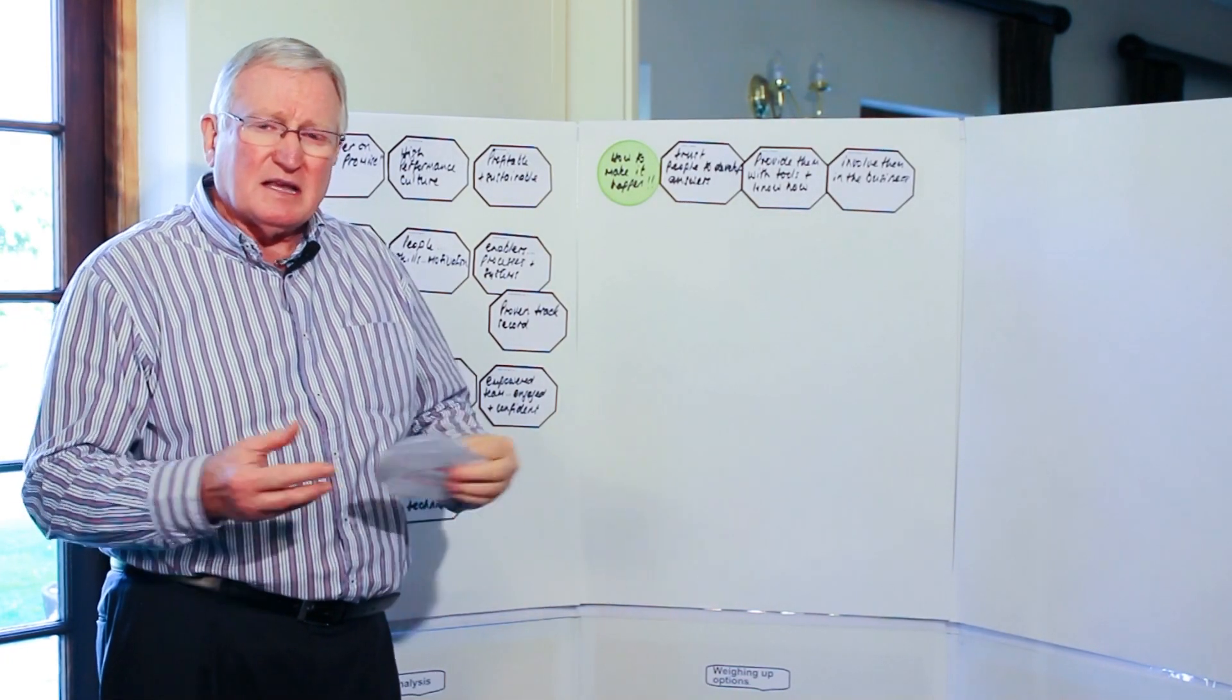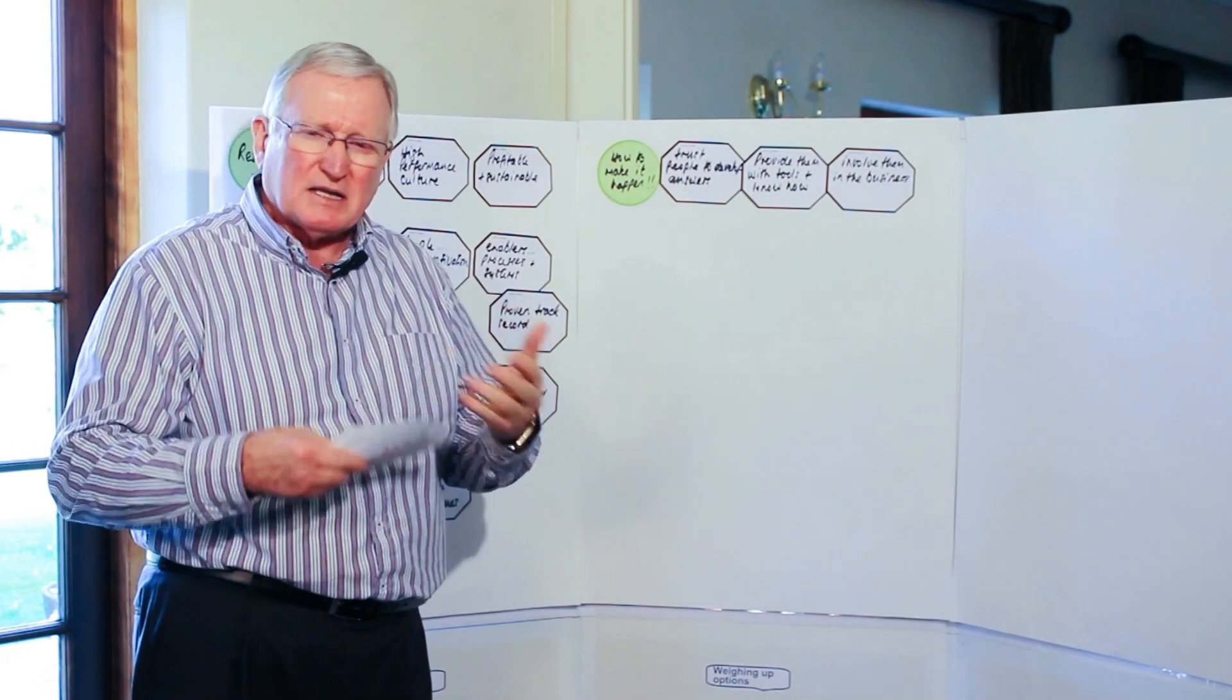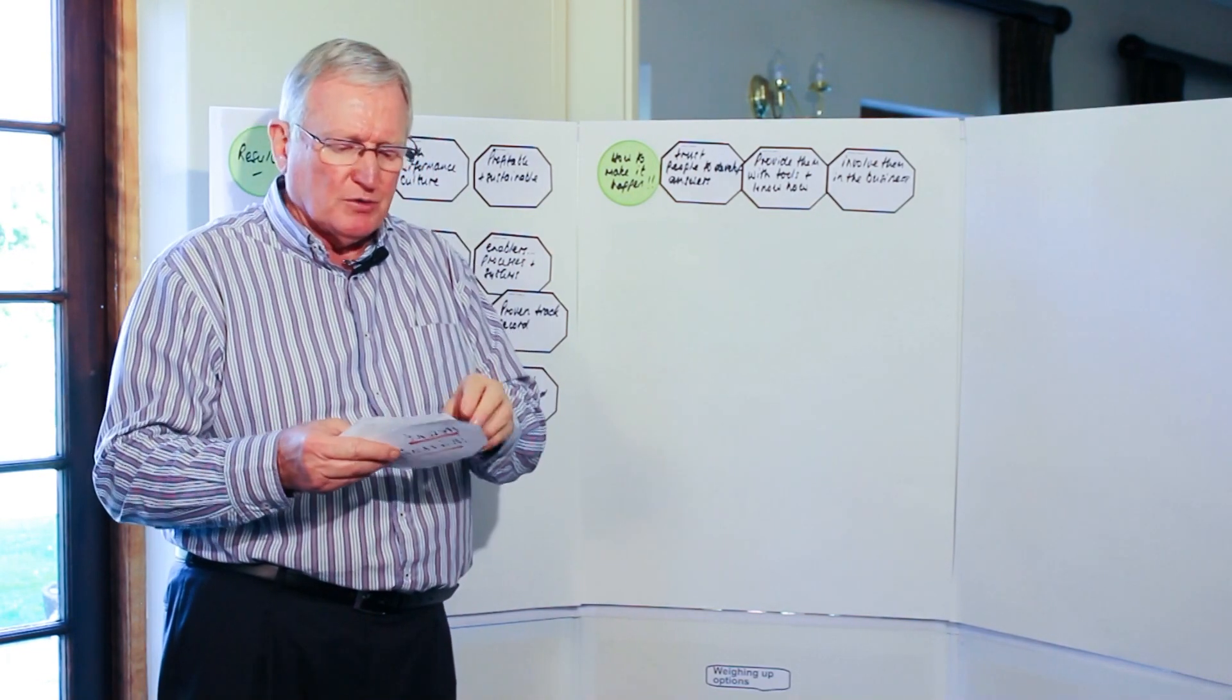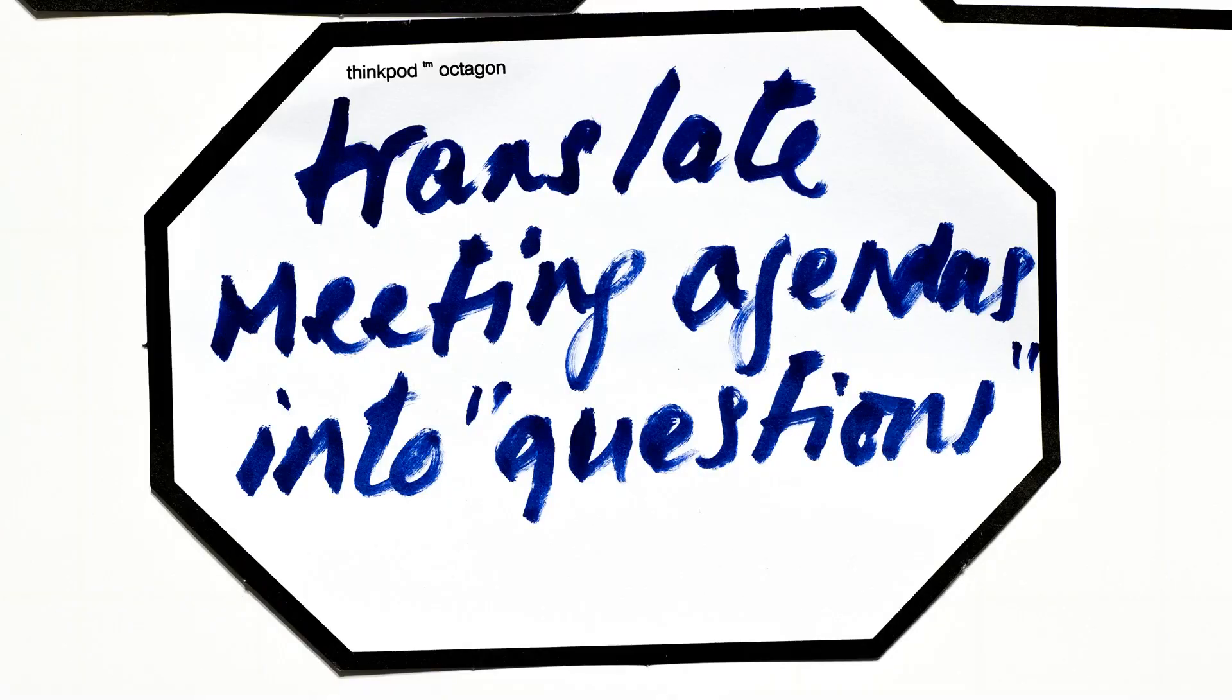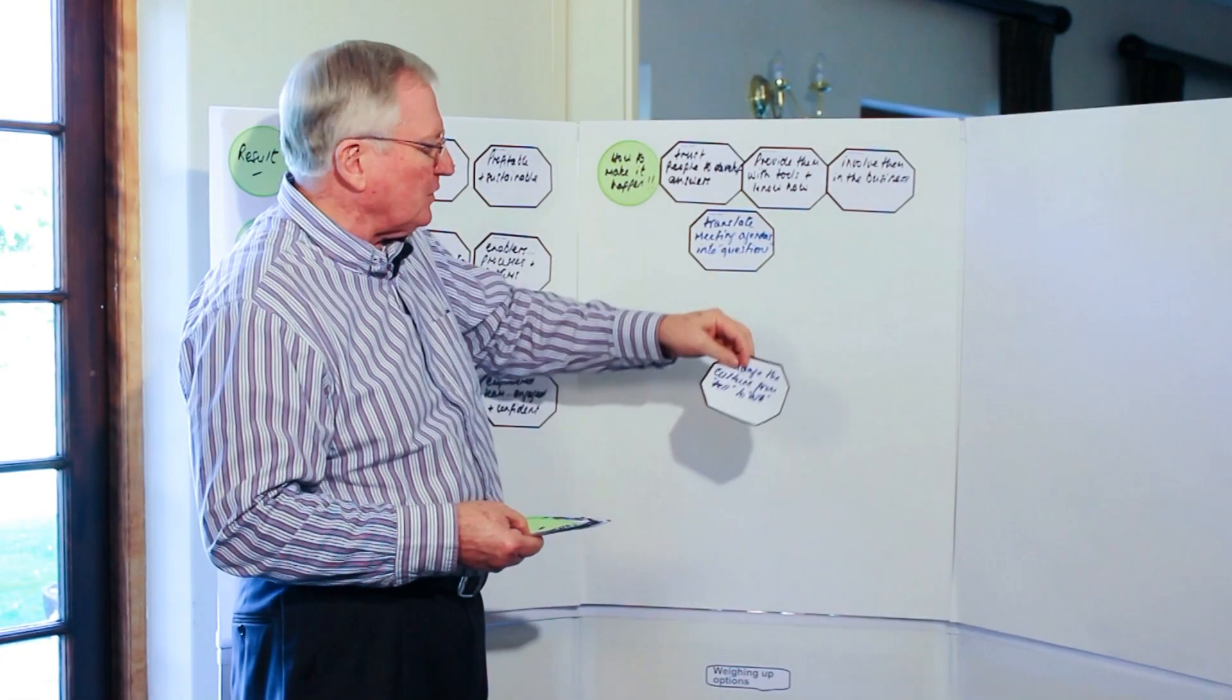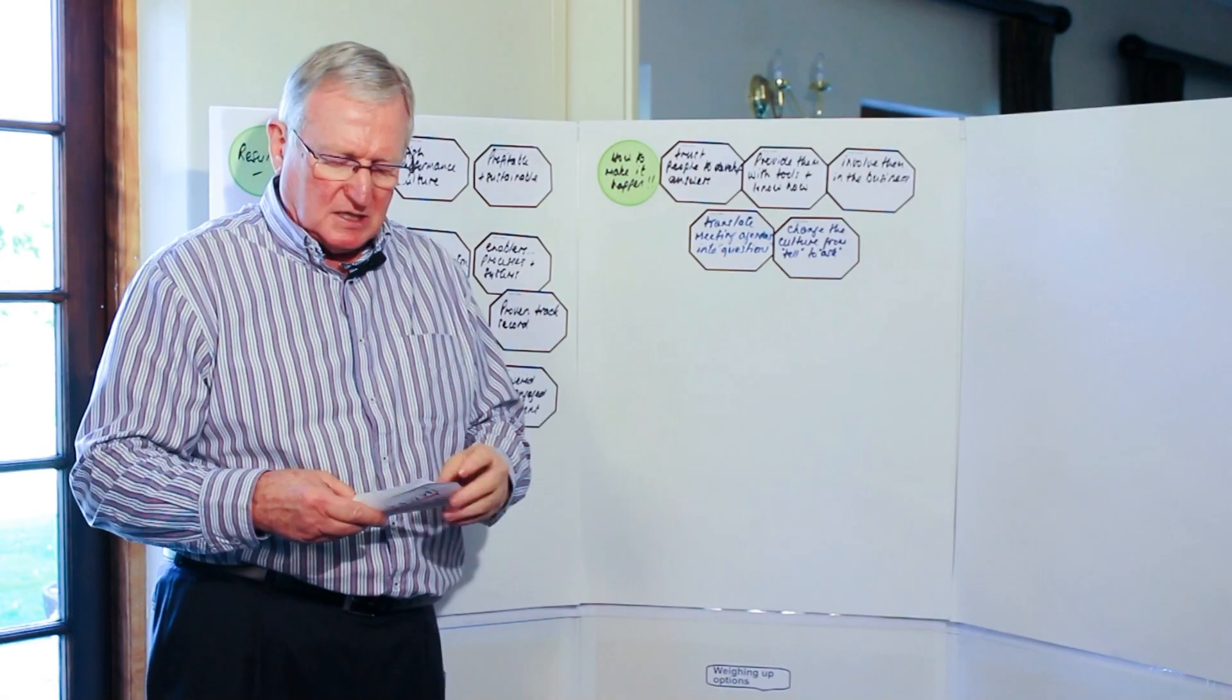And the easiest way to do this is instead of telling people what to do, start changing our mindset and our culture in the organization to one of saying, this is what we're trying to achieve, how can you help us get there? What do you think we should be doing to achieve the objectives that we're trying to get to? And what that essentially means is we need to start translating our meeting agendas into questions that we ask people and engaging them and getting responses to the questions. That really says that ultimately the aim is to change our culture in the organization, from telling people what to do to now asking people how they can help us get where we want to get to.